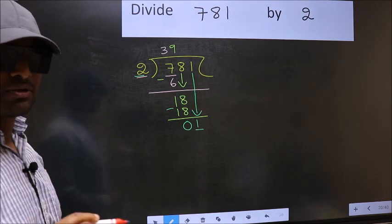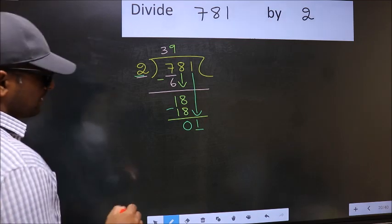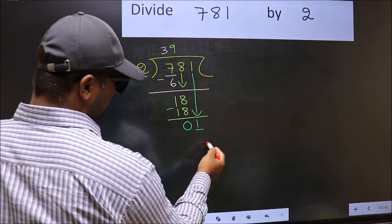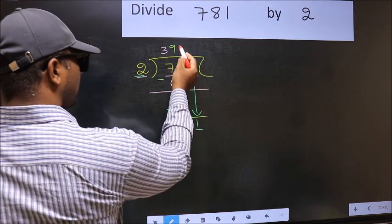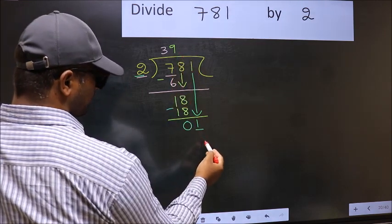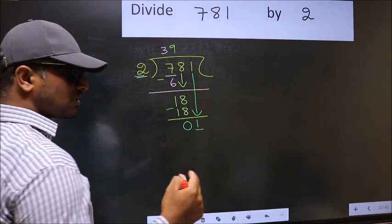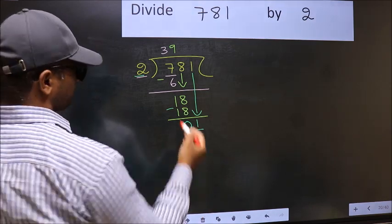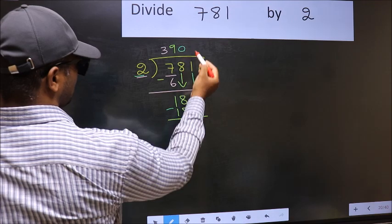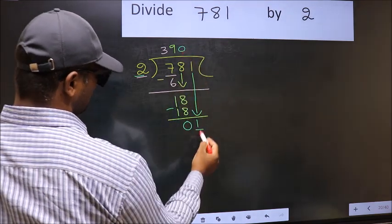Instead, what you should think of is, what number should we write here. If I take 1 here, I get 2. But 2 is larger than 1. So what we should do is, we take 0. So 2 into 0, 0.